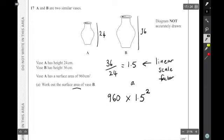And 960 times by 1.5 squared should give me the area of vase B. So you just do that on your calculator and hopefully check the right answer. It's going to be over 2000, isn't it? So that's going to be 2160 centimeters squared.